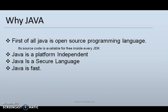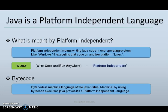Java is platform independent, Java is a secured language, and Java is fast. Java is a platform independent language — what is meant by platform independent? Platform independent means writing Java code in one operating system like Windows and executing that code on another platform like Linux.